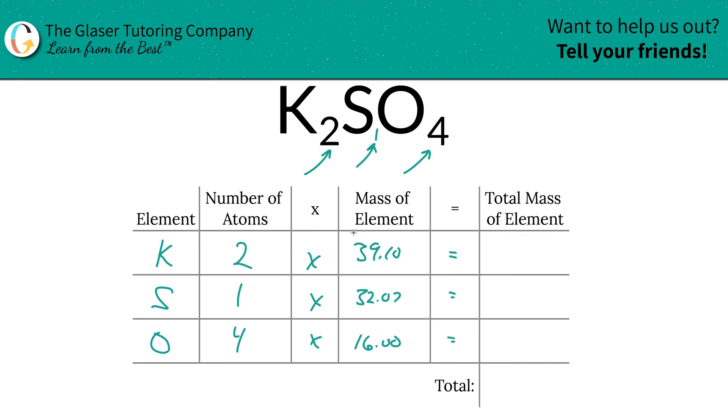Now what we're going to do is find the total mass of the element. We simply have to multiply this row across. So for potassium, the total mass of potassium here is going to be 78.20. The total mass of sulfur is going to be 32.07, and the total mass of oxygen is going to be 64.